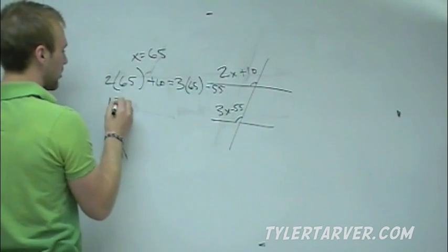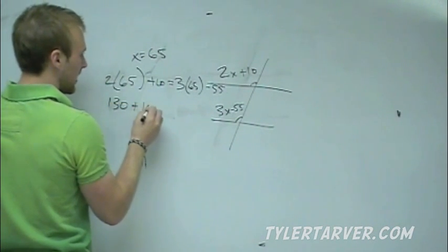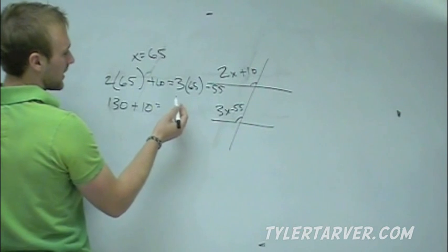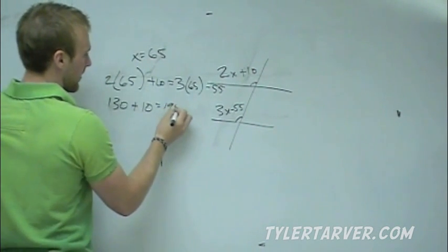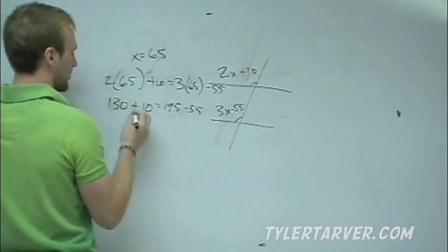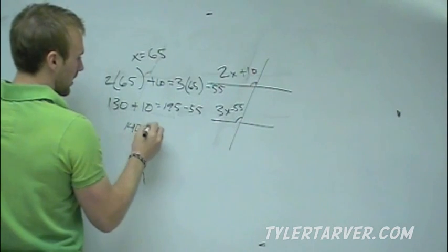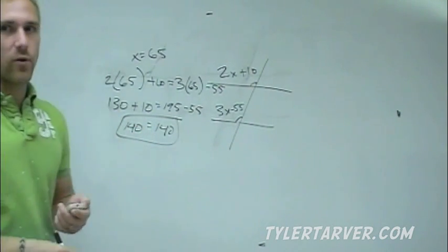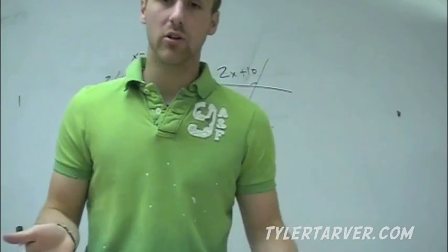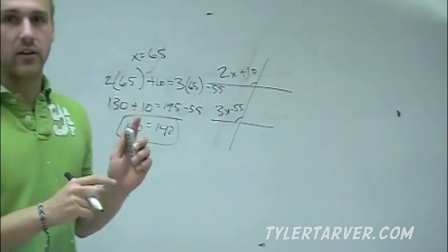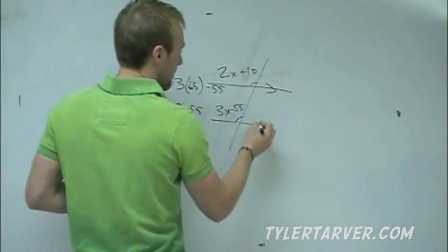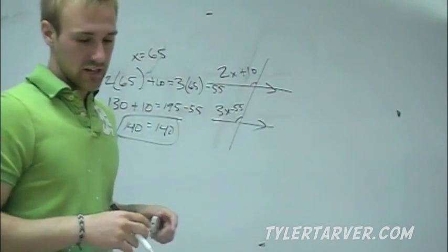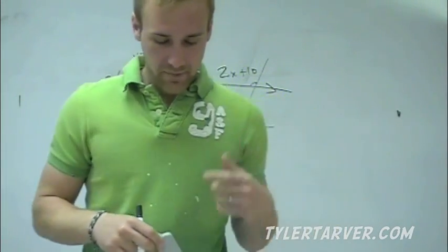2 times 65 is 130 plus 10 equals, and then 3 times 65 is 195 minus 55. That'd be 140, and that'd be 140 equals 140, which is true. So, therefore, since those two angles are congruent, these lines have to be parallel. We mark parallel lines with those little things right there.